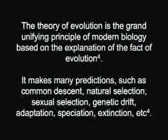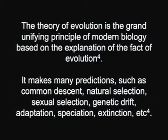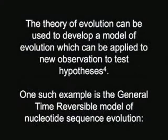Based on the explanation of the fact of evolution, the theory makes many predictions such as common descent, natural selection, sexual selection, genetic drift, adaptation, speciation, extinction, etc. The theory of evolution can be used to develop a model of evolution which can then be applied to new observations to test hypotheses. One such example is the General Time Reversible model of nucleotide sequence evolution.